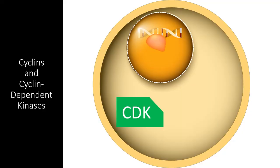So what are these molecules that actually control the cell cycle? The most common molecules involved in regulating the cell cycle are cyclin and cyclin-dependent kinases.